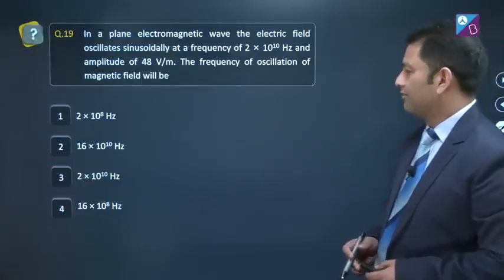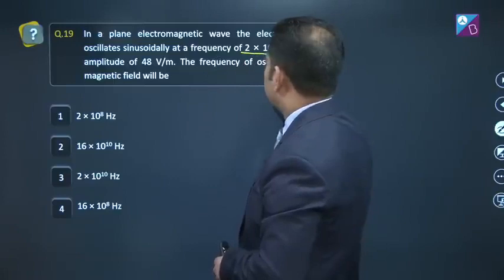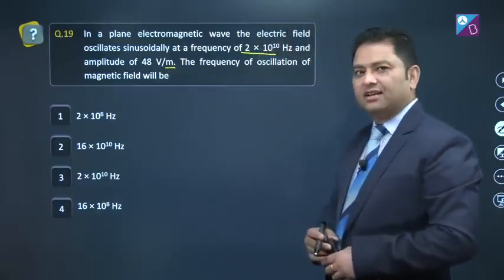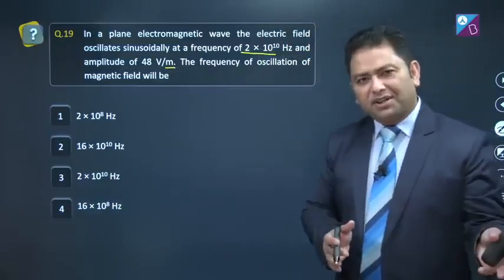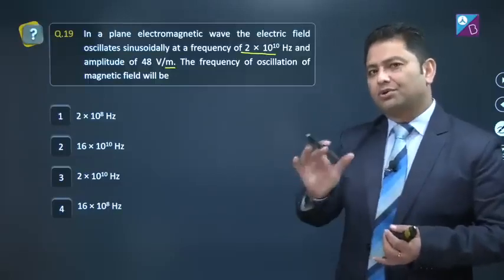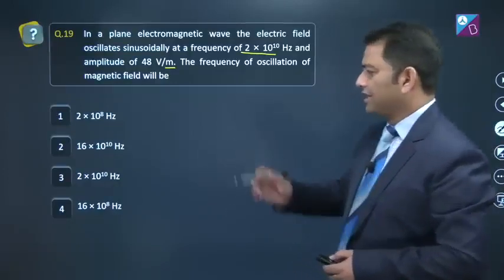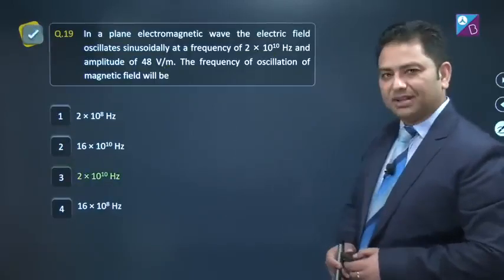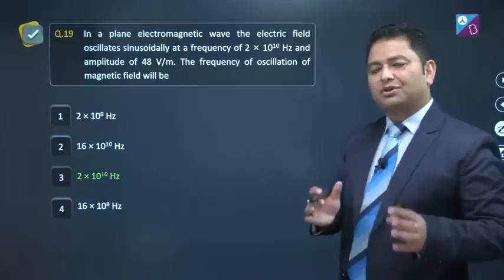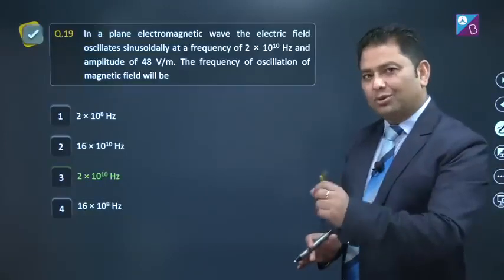Question number 19. In a plane EM wave, electric field oscillates sinusoidally at this frequency and amplitude. Frequency of oscillation of magnetic field. Well, this is based on property. Electric field and magnetic field frequency and phase, both will be same. So here calculation is not needed. That will be 2 into 10 raised to the power 10, option number 3. Some questions are difficult, some are easy. So all you have to do is, when you find difficult question, don't start panicking there. You'll get plenty of opportunities ahead.